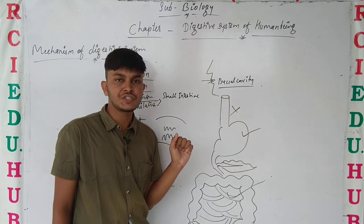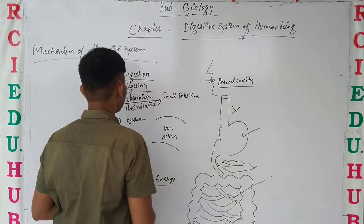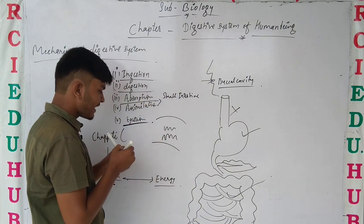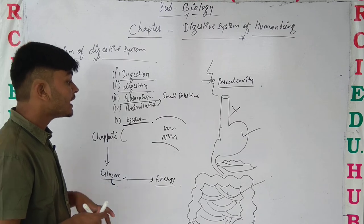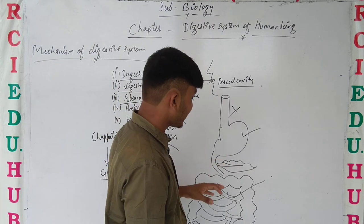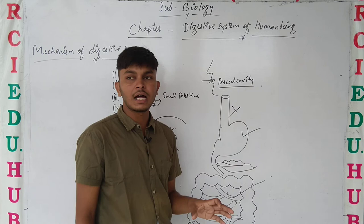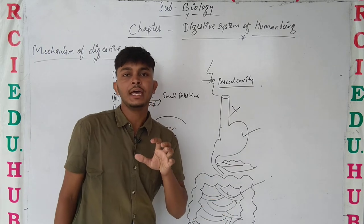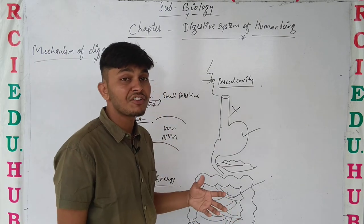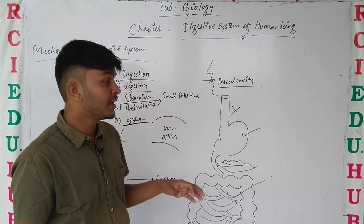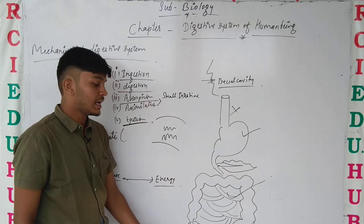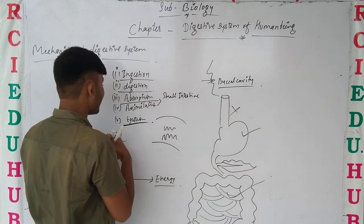After assimilation, we talk about the final step. The undigested food is removed from the body. It is stored in the rectum for a short period of time, and after a certain time it is released from the anus. That process is known as ejection.